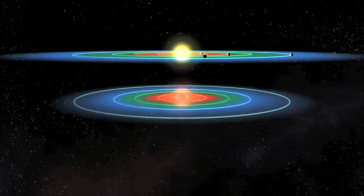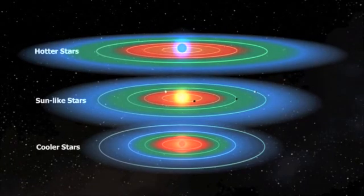The larger a star, the farther away the Goldilocks region is. The smaller a star, the closer in it is.